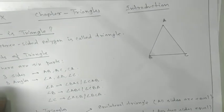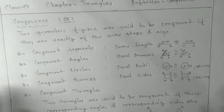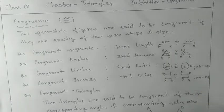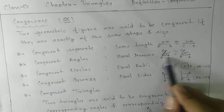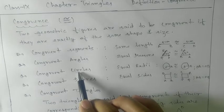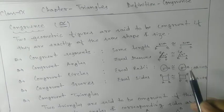Now we will go for congruence. What do we mean by congruence? Two geometric figures are said to be congruent if they have the same shape and size. Two line segments are said to be congruent if they have equal length. Congruent angles have equal measure, like 30 degrees and 30 degrees. Two circles are congruent if they have equal radius — for example, if both have radius 5 centimeters.